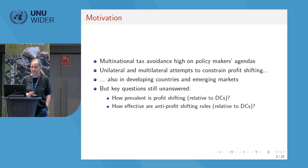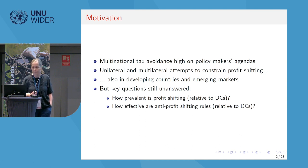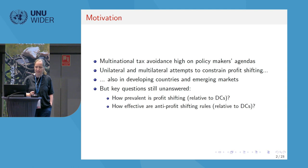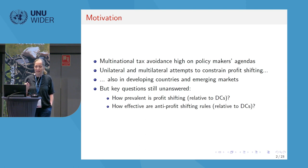As we've heard many times in this conference, multinational tax avoidance is very high on policymakers' agendas, and we have seen reforms — unilaterally and multilaterally — that aim to constrain profit shifting to low-tax countries. Developing nations and emerging markets have played a very active role in that process. But from an academic perspective, many questions are still unanswered: in the context of developing countries, how prevalent is multinational profit shifting, and how effective are anti-profit-shifting regulations?